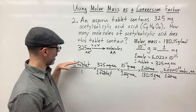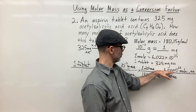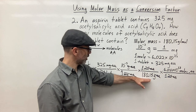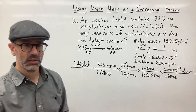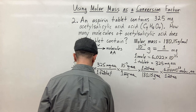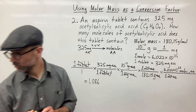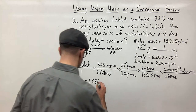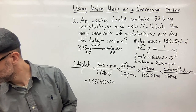I'm going to multiply 325 by 10 to the negative three, multiply that by 6.022 times 10 to the 23rd, and then divide by everything on the bottom. Everything is 1 except for 180.15, so I divide by 180.15. The result is approximately 1.086 — let me double check — it comes out to 1.086 times 10 to the 21 molecules.